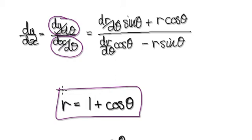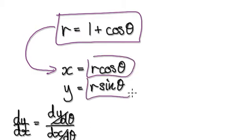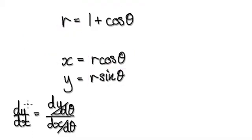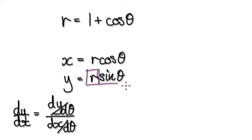Looking at the original polar equation — once you have your polar equation, x is given by this and y is given by this. So if you want to find dy by dx, work out dy by dθ, meaning differentiate the y expression. Remember, r is a function of theta, so you've got to use the product rule.